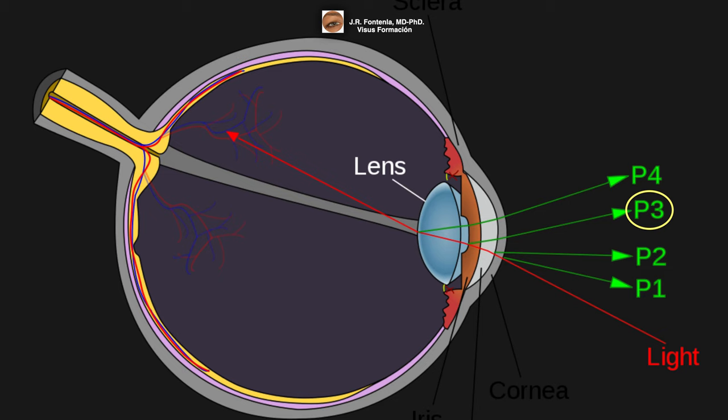The first and fourth Purkinje images are used by some eye trackers, devices to measure the position of an eye. The first and fourth Purkinje images move together through exactly the same distance. If the eye rotates, however, the two images move through different distances and do change their separation.